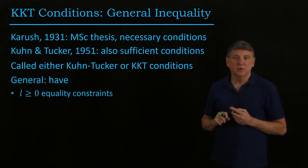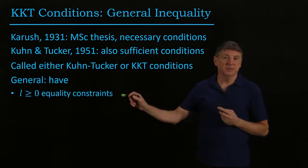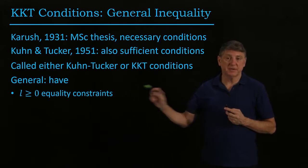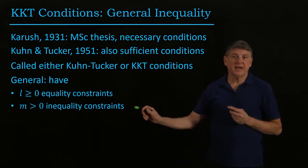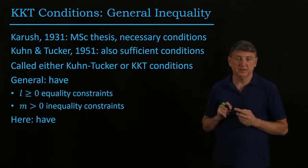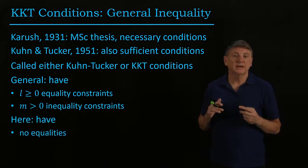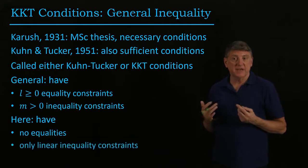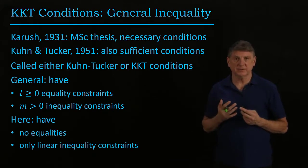So in general, we have possibly zero, but we have a number of equality constraints that may hold. And we have, in our case, at least one inequality constraint. And what we'll look at are situations where we have no equality constraints and we have linear inequality constraints.